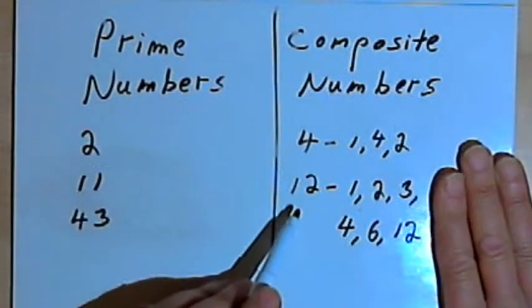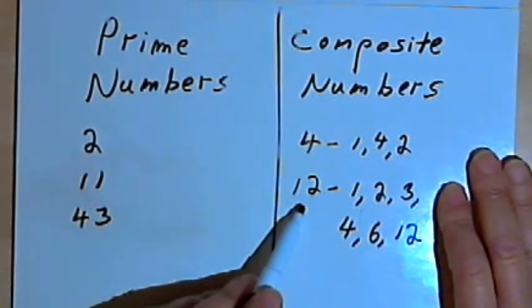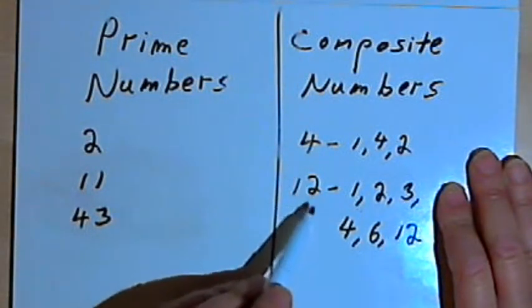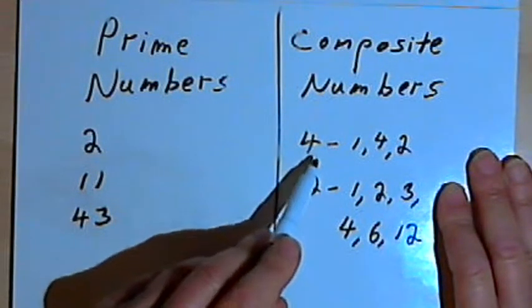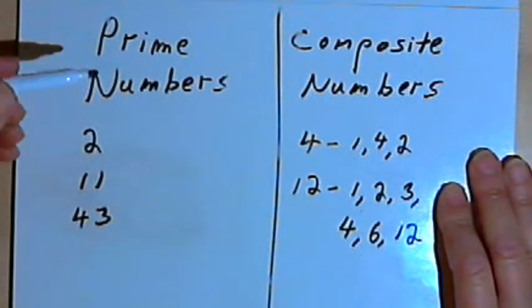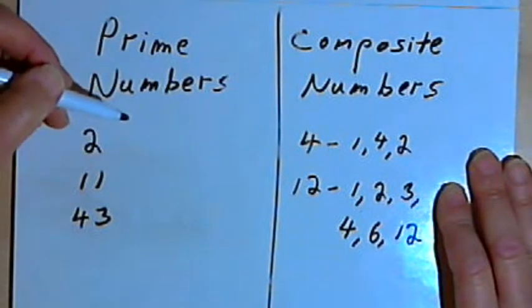Now each of the numbers that I can divide 12 by is called a factor of 12. So 12 has these 6 factors. 4 has 3 factors. Another way to talk about prime and composite numbers would be to say that a composite number has more than just 2 factors.